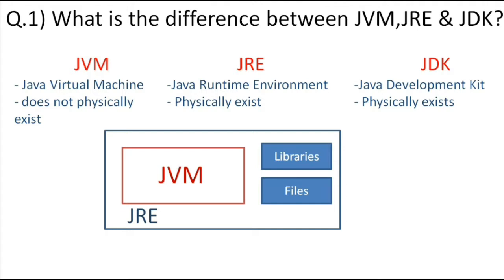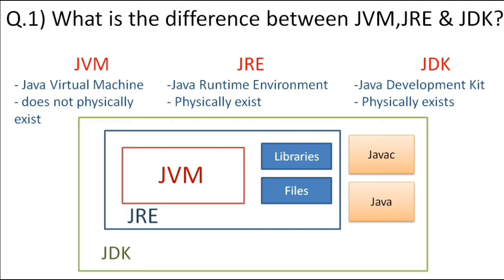JRE is required only to run Java applications. But if you want to code, compile, and debug your Java application, you need additional tools like javac, java, etc. These tools come inside JDK. So JDK is a package of JRE plus these development tools, and it can be downloaded — it physically exists.